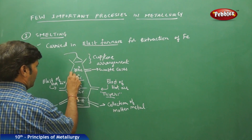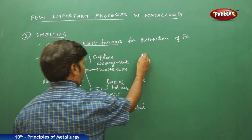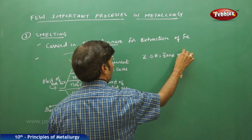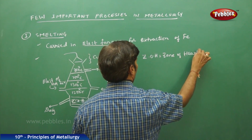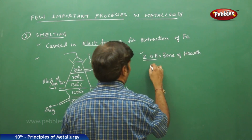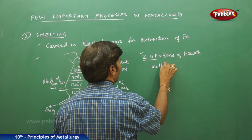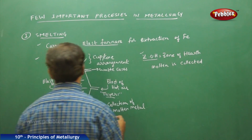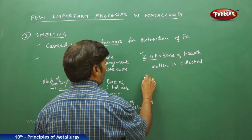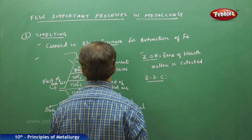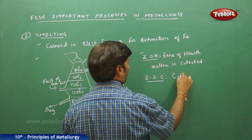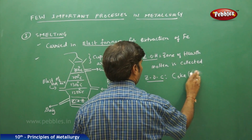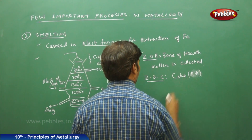The blast furnace has different zones. The first is the Zone of Earth (ZOE), where molten metal is collected. The next is the Zone of Combustion (ZOC), where coke acts as both a fuel and a reducing agent.